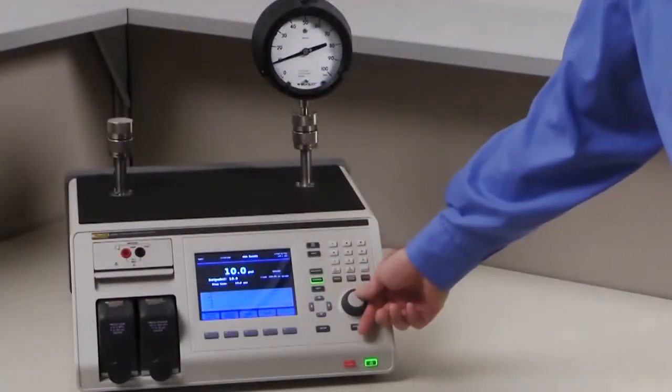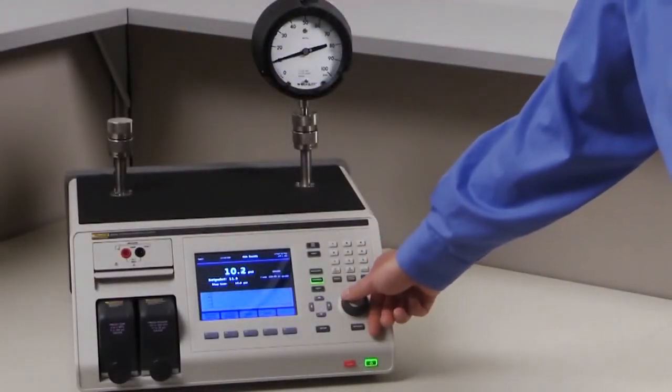When testing an analog gauge, you can easily jog the pressure by using the rotary wheel on the front panel.